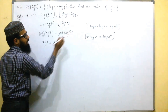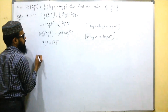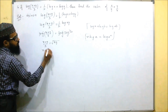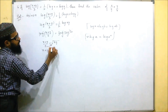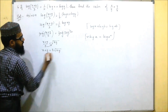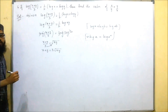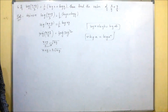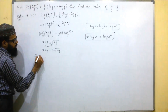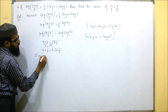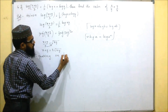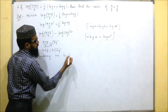We can write (xy)^(1/2) as root(xy). So x + y = 3·root(xy). To remove the square root, we square both sides.